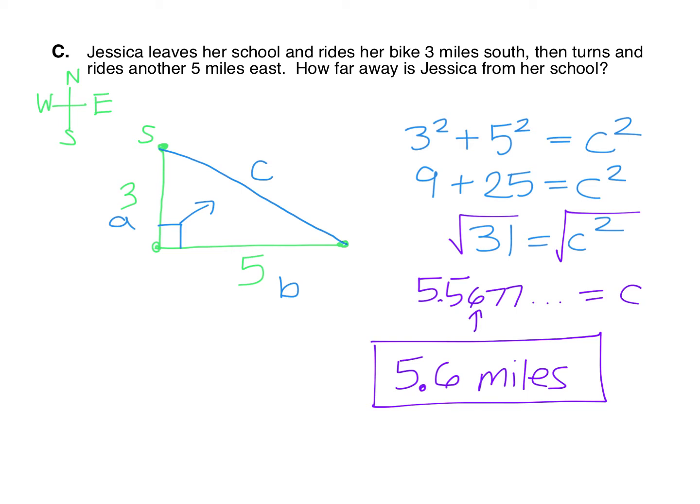When you're typing this into Schoology, you just need to type out the equation part, the C equals the square root of 31 part, and your final answer in the answer box of 5.6 miles. You also should add in the numbers to the picture that's provided in the I and B. So the 3, the 5, and the C.